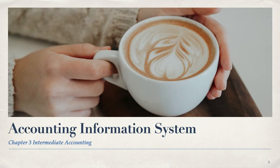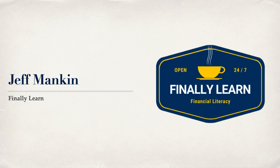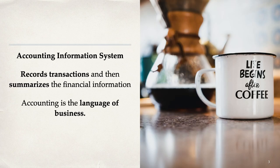Hello and welcome. We're working today on Accounting Information Systems, which is chapter 3 in Intermediate Accounting. My name is Jeff Mankin and I help you finally learn financial literacy. The accounting information system is the system that records transactions and then summarizes the financial information in the form of financial statements. Remember, accounting is the language of business, so there are terms you need to know to understand how to do accounting.